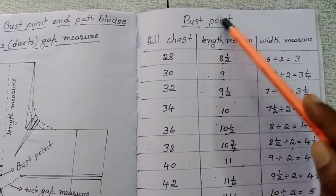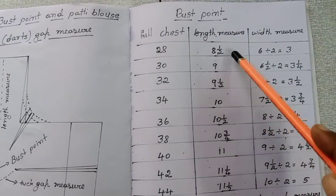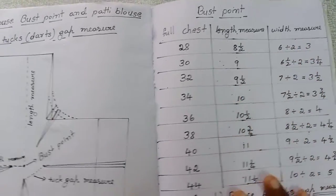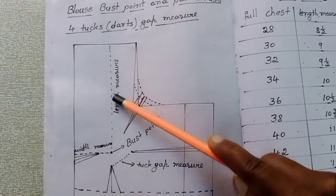Here's a burst point and full chest. Here's length measure. If you look here, make it a straight line.